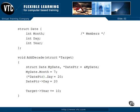Here's just a little bit of code to illustrate some of this. We have our structure date with month, day, and year in it, just like before. This is just a declaration — we're not defining any actual variables here, just our structure declaration to give us the date type. Here's our addDecade function again.